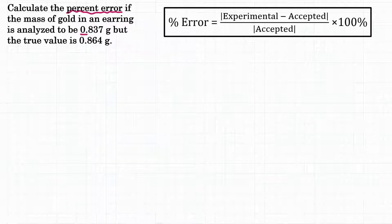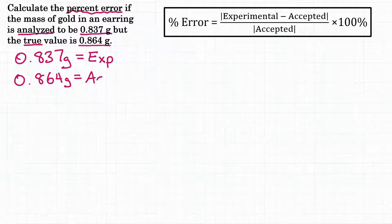We have this 0.837 grams, so that's our experimental value. That's what we determined in lab, or we analyzed and got that number in real life. And then we were also given this 0.864 grams, and that's our true value, or the actual amount of gold that the earring contains. So I like to call that the accepted value. It could also be called the theoretical or the actual. There's a couple different names that all mean the same thing.